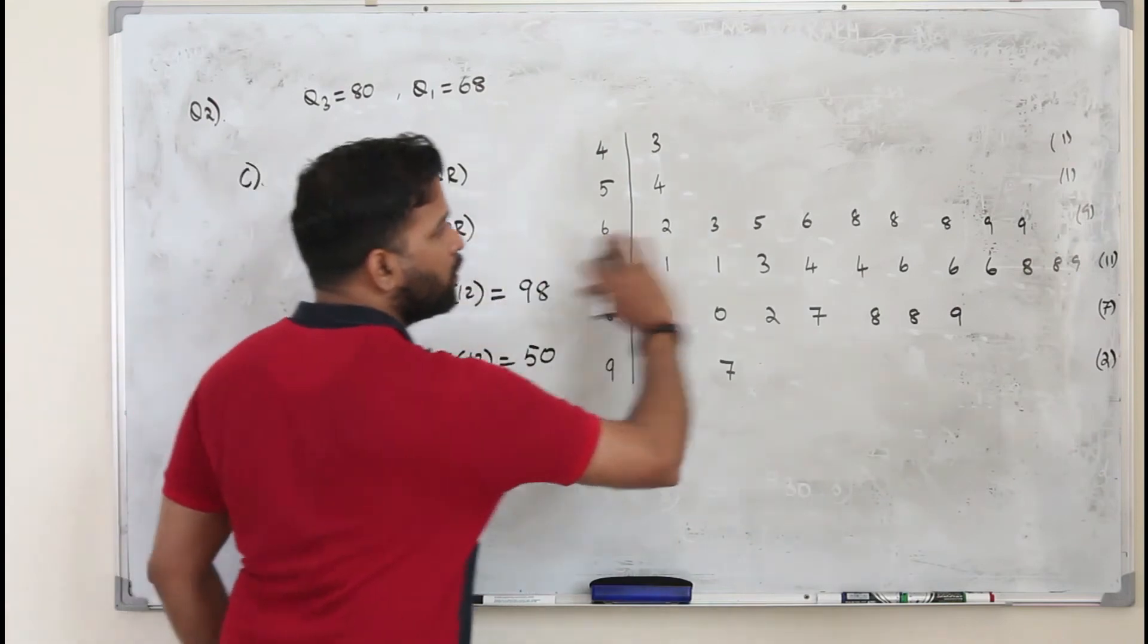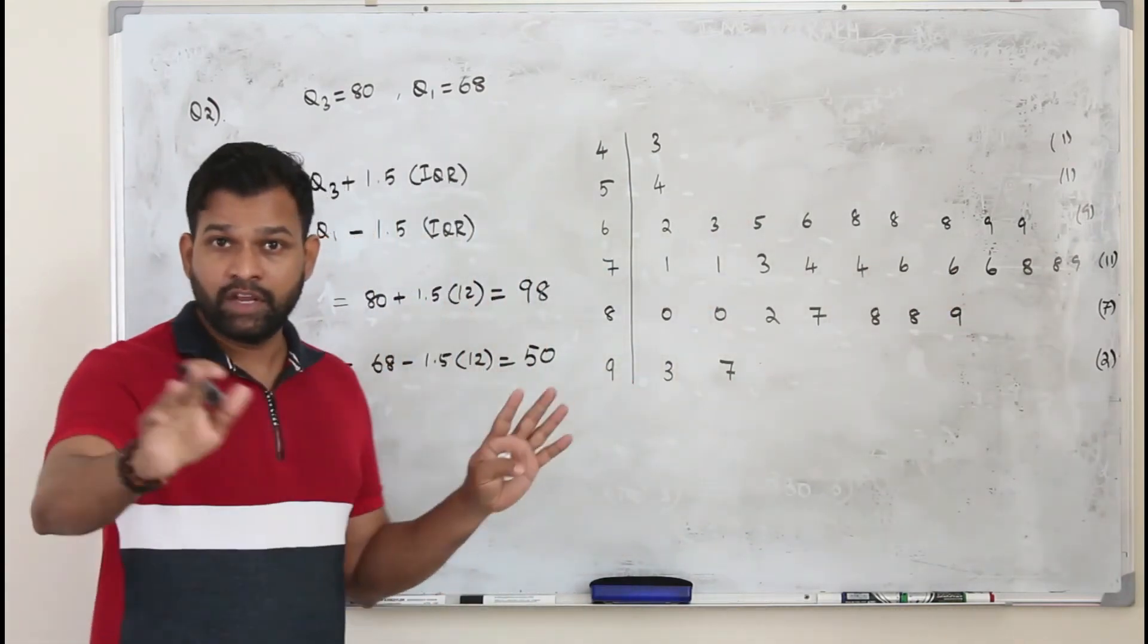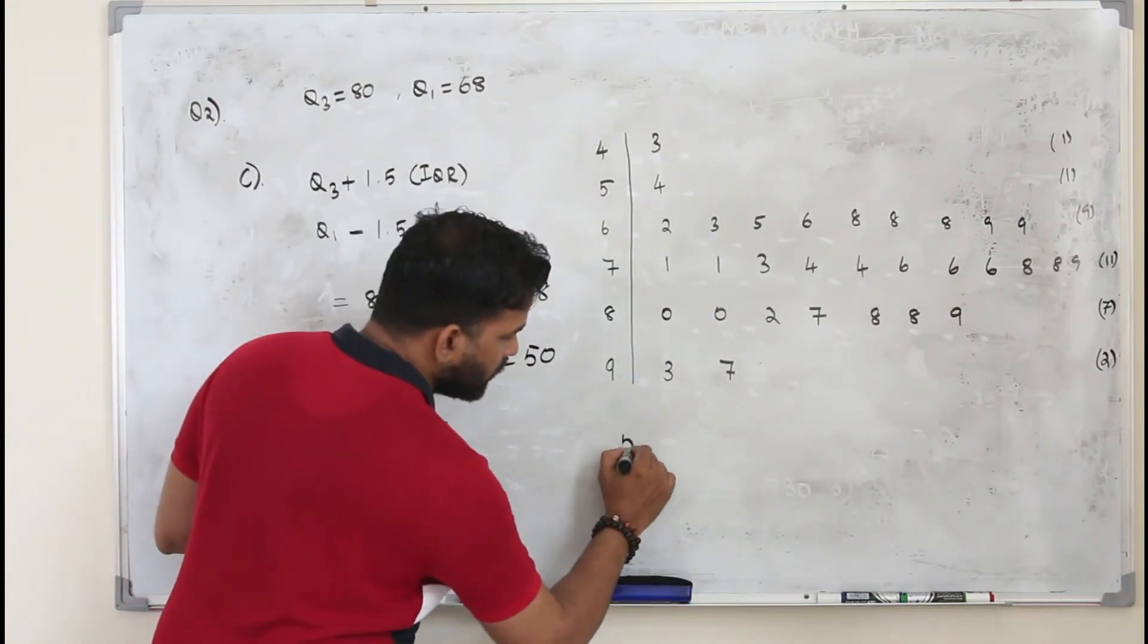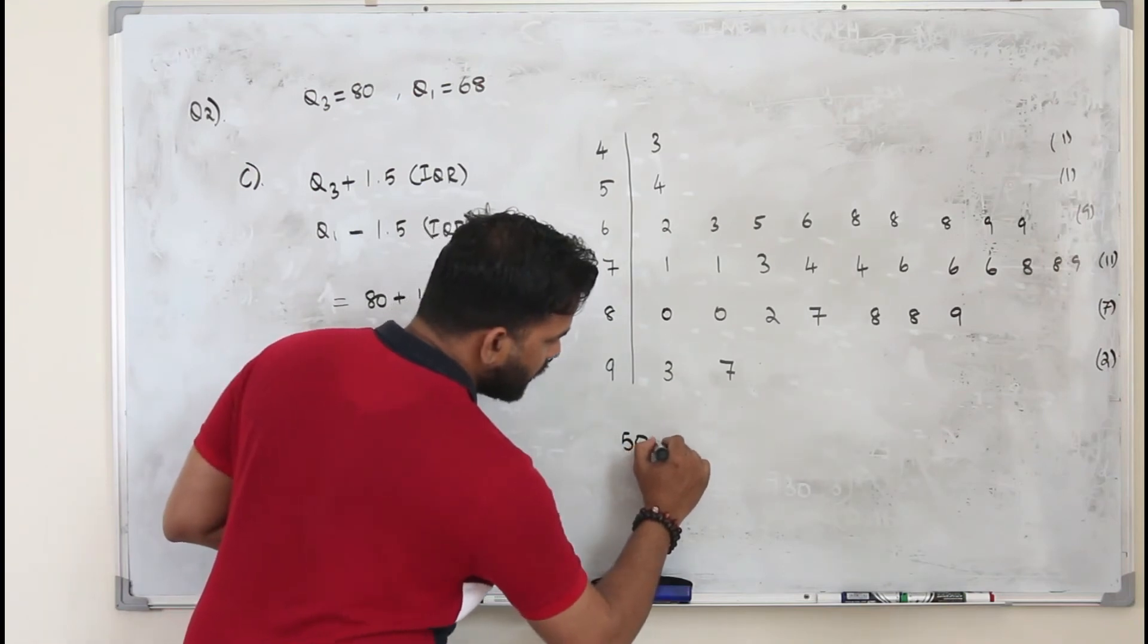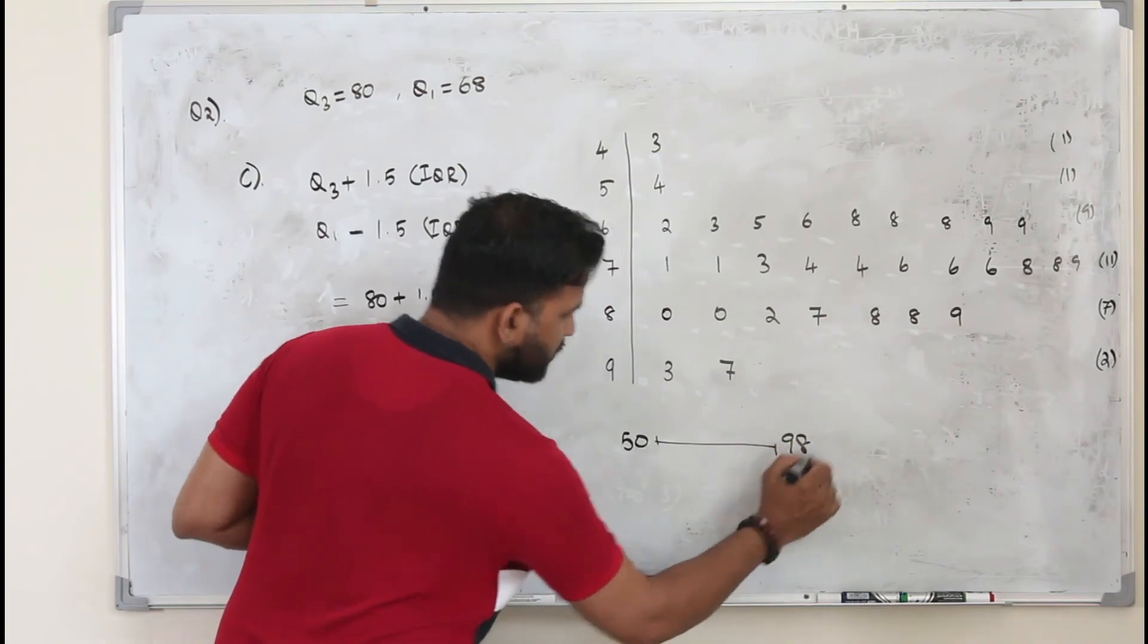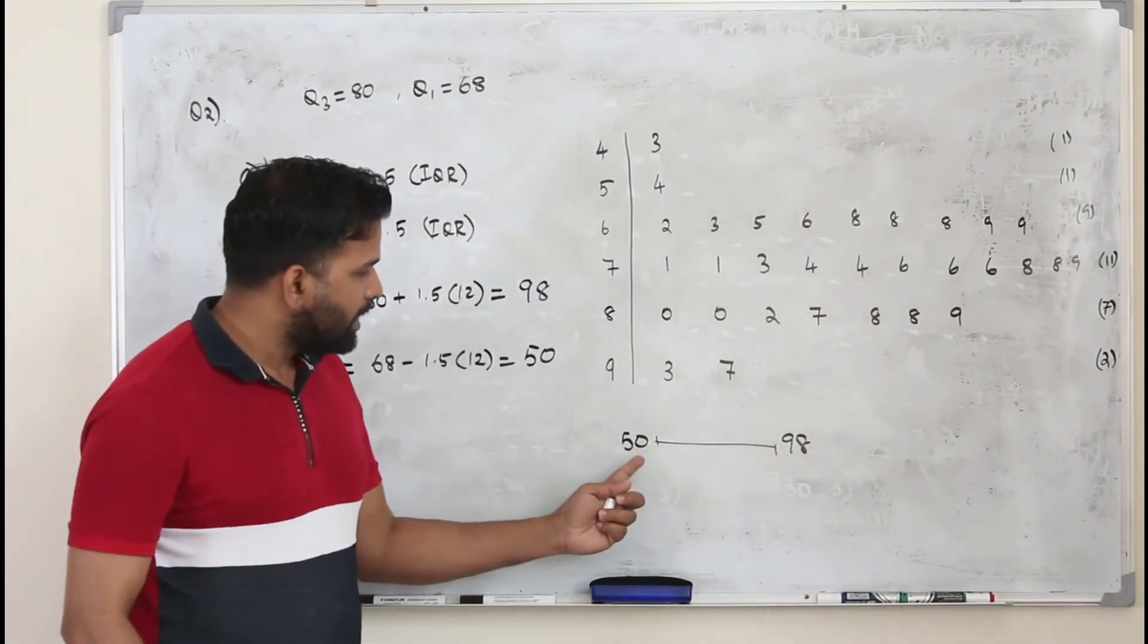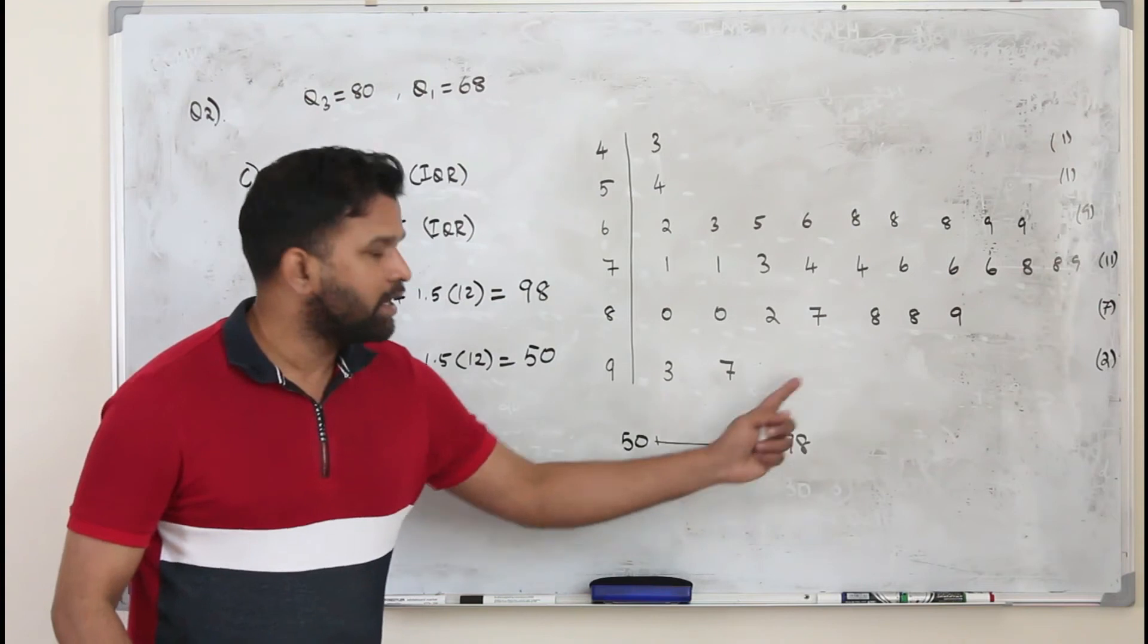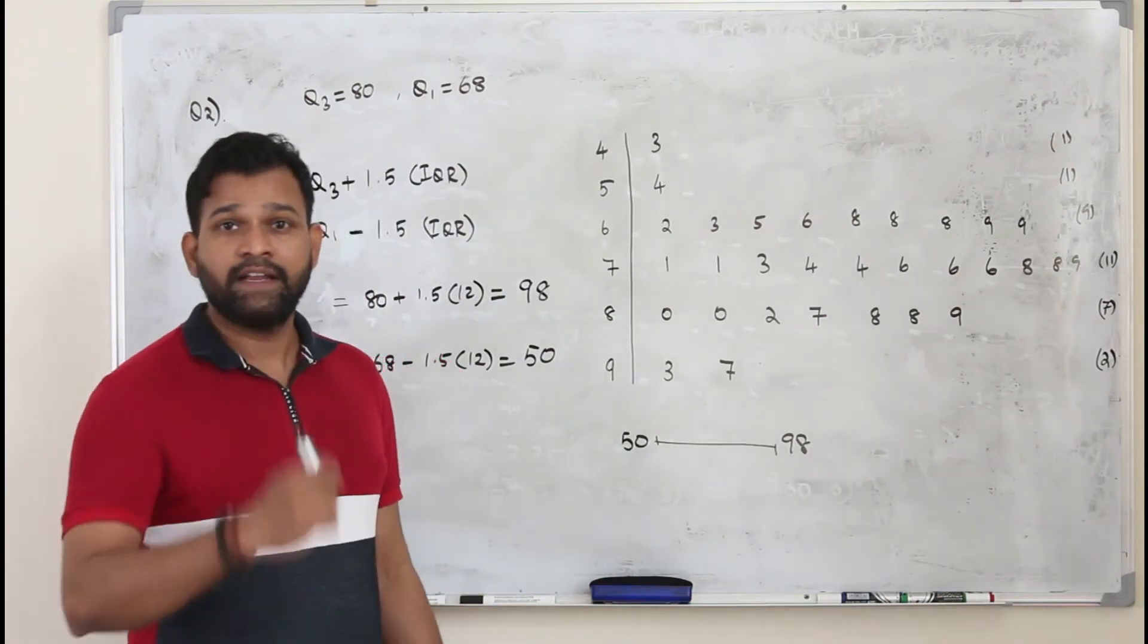So if you put the set of data in ascending order, you can take all the values from 50 to 98. So anything less than 50 or more than 98 is considered an outlier.